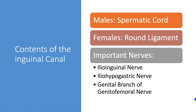Contents of the inguinal canal. In males, the inguinal canal contains the spermatic cord. In females, the inguinal canal contains the round ligament, which ends in the vulva. The three important nerves of the inguinal canal are the ilioinguinal, iliohypogastric, and the genital branch of the genitofemoral nerve.